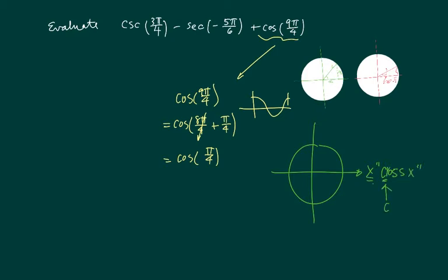Since it's π over 4, that's 45 degrees, we're going to read in this unit circle what the x value is.